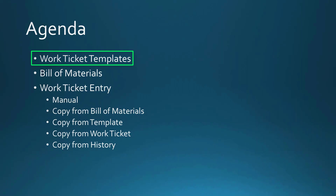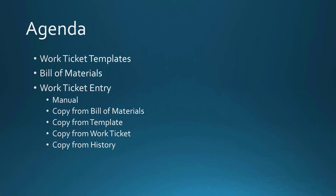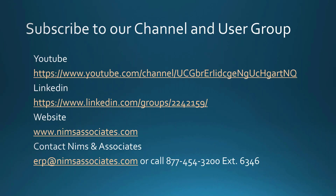So once again we talked about work ticket templates — how to create them and what can be involved in terms of steps and material. Then in work ticket entry, we can manually create a work ticket with at least one step, or we can copy from bill of materials, copy from templates, copy from other work tickets, and copy from history. Thank you very much for your attention today. You can find us on our YouTube channel, we're on LinkedIn, our website is www.nimzassociates.com, and you can contact us at erp@nimzassociates.com or call 877-454-3200 extension 6346.